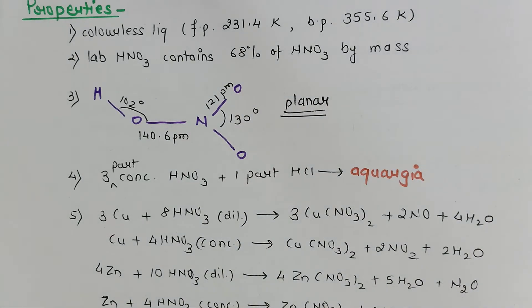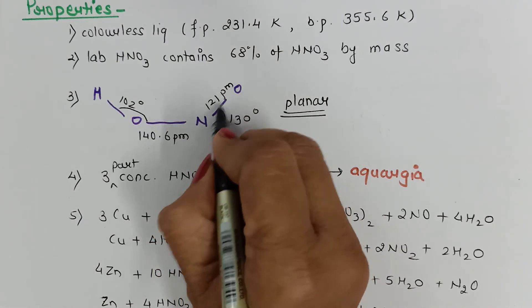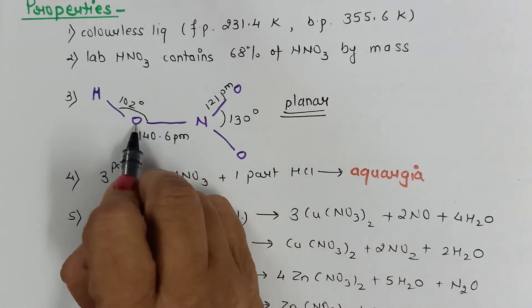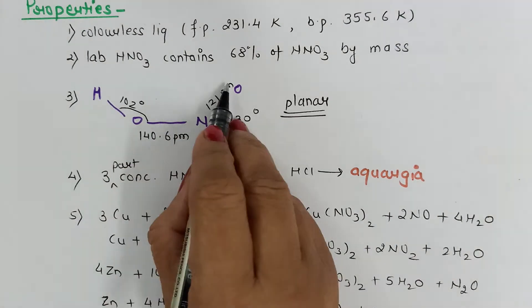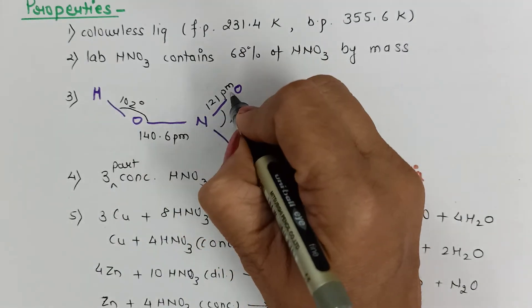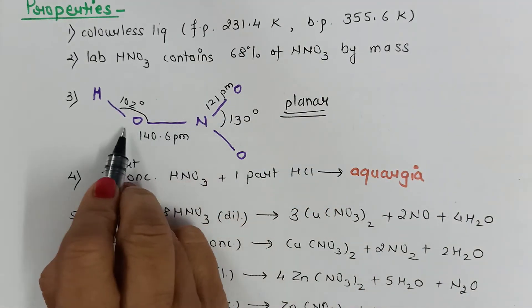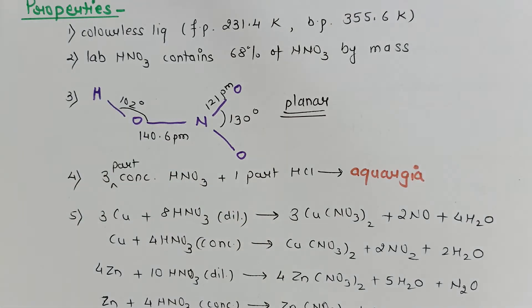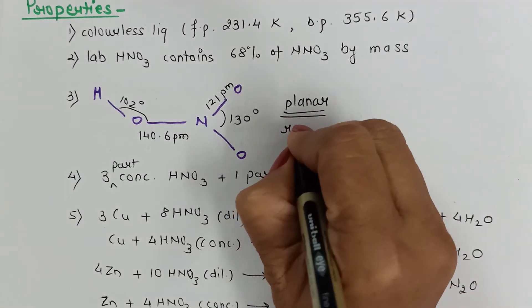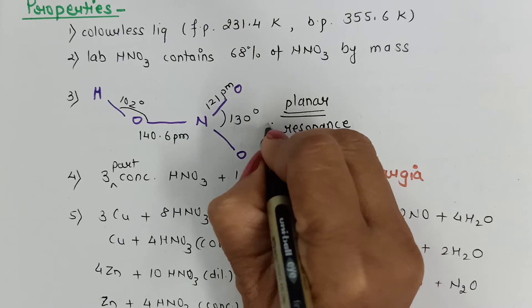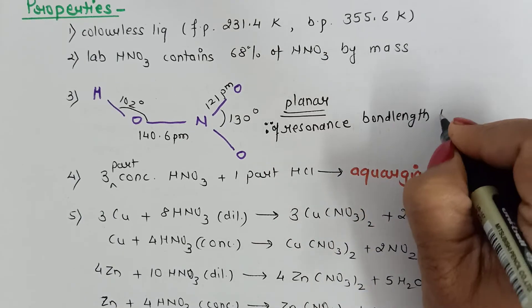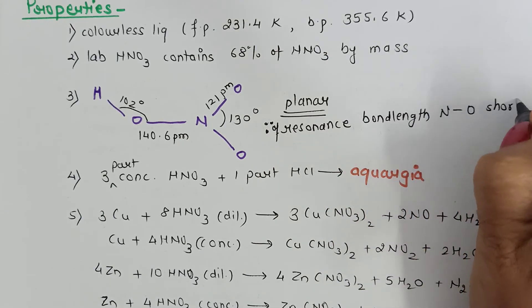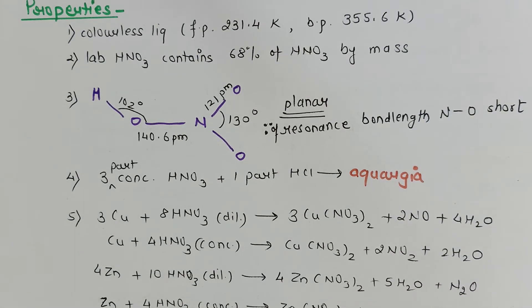In the planar structure of nitric acid, there is a difference in bond lengths: the N=O bond length is 121 pm, whereas the N–OH bond length is 140.6 pm. In both cases nitrogen is bonded to oxygen, but the lengths differ. The reason is resonance — due to resonance the bond length of N–OH is shorter. This is an important 'give reason' question.